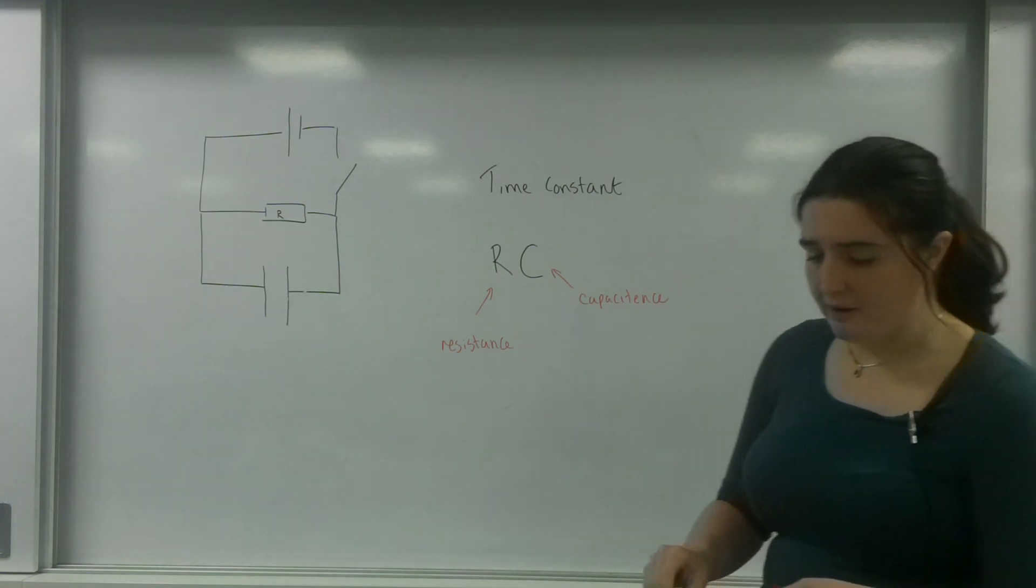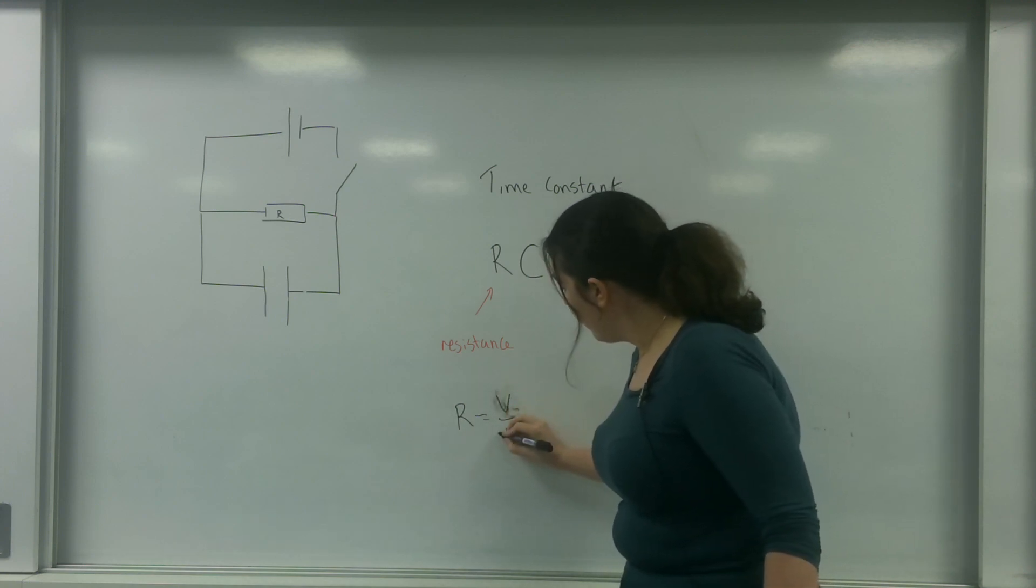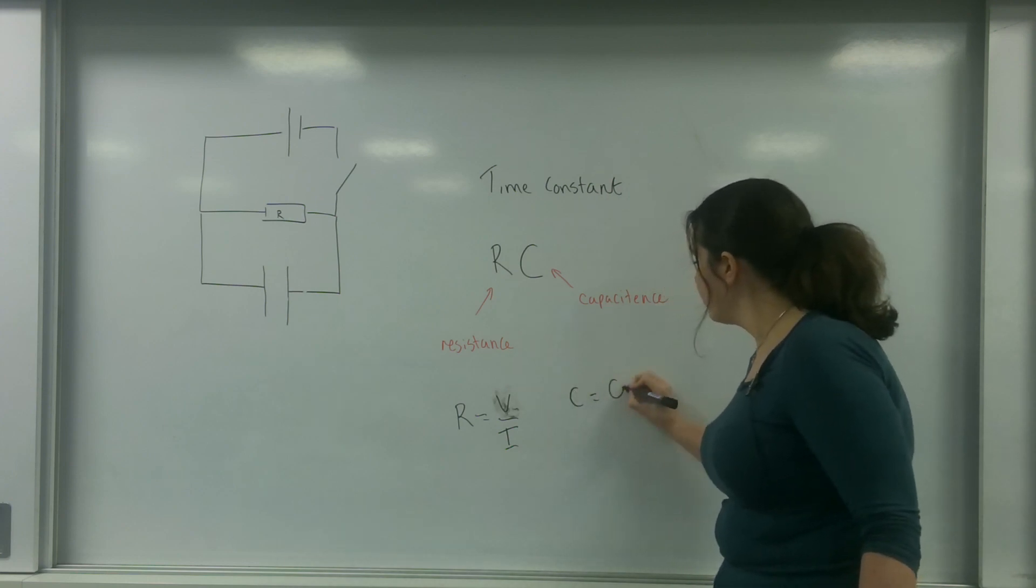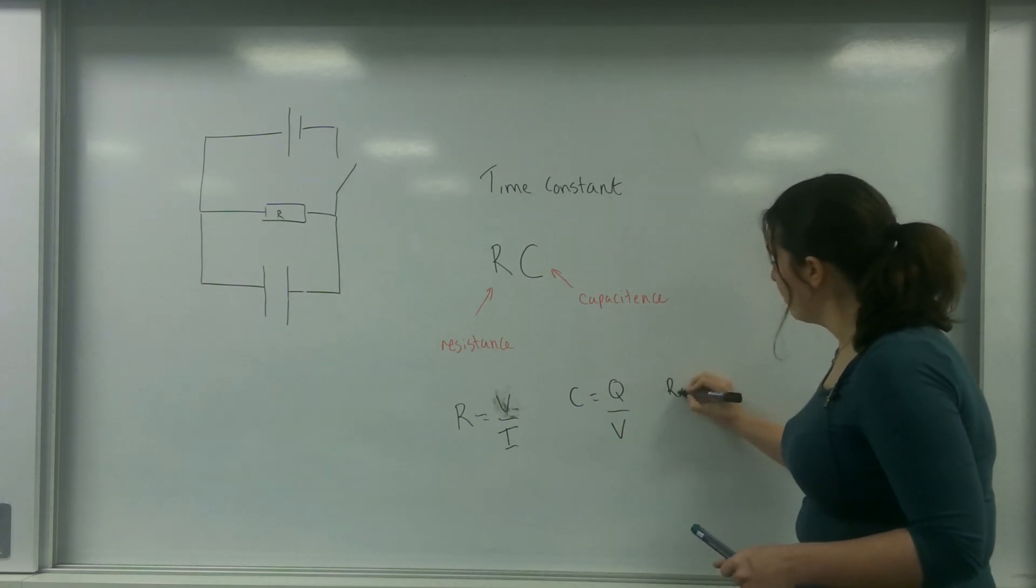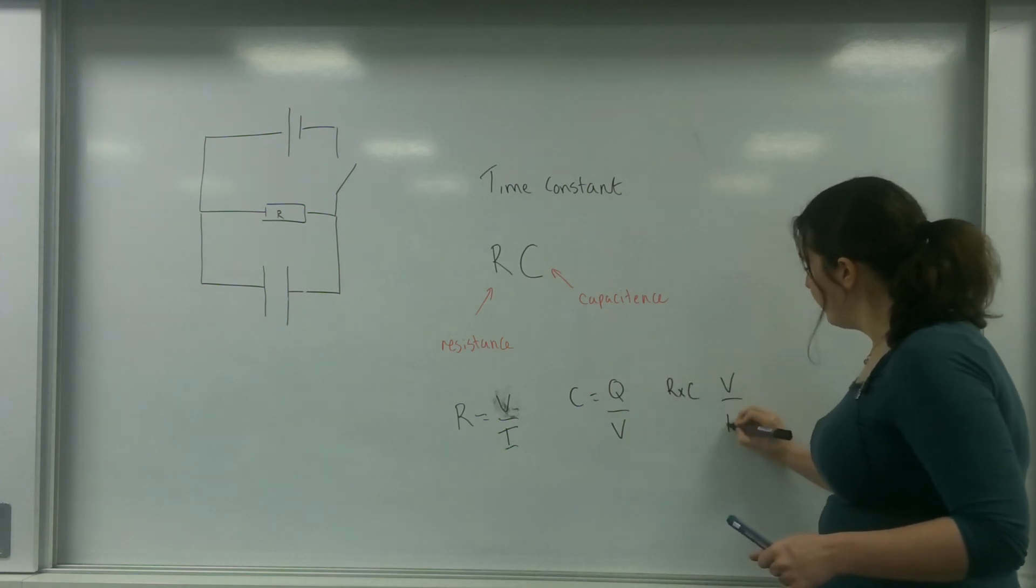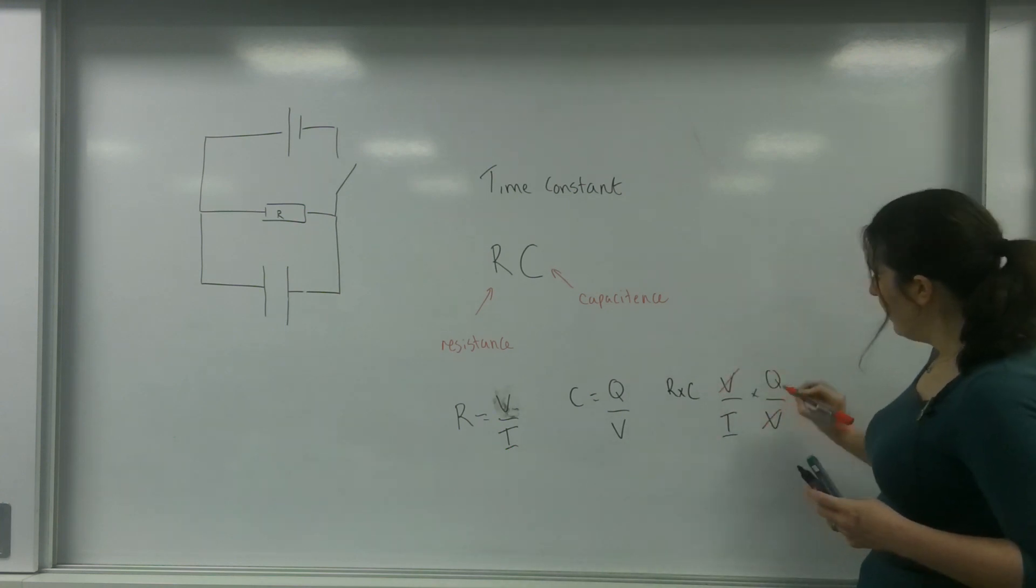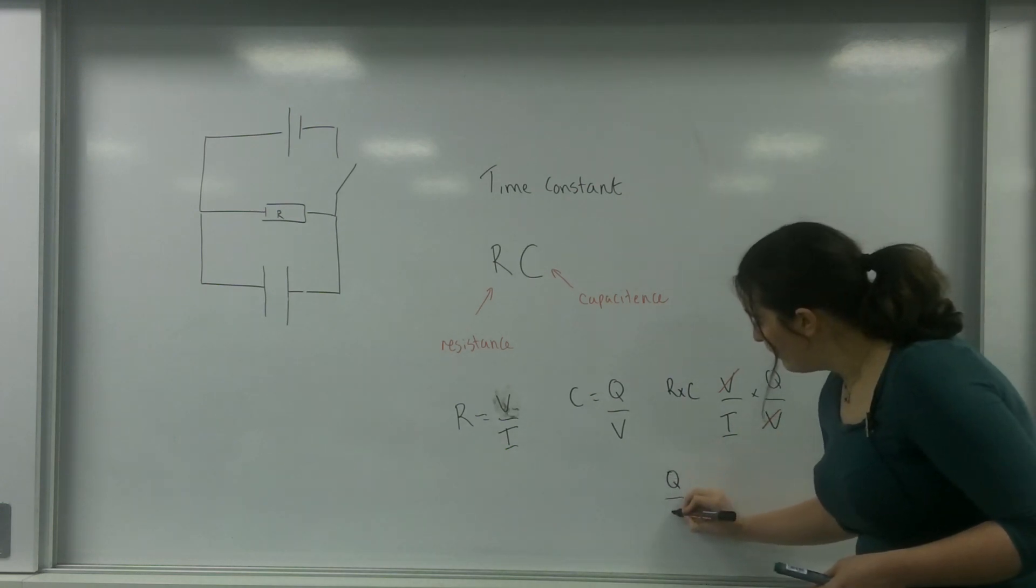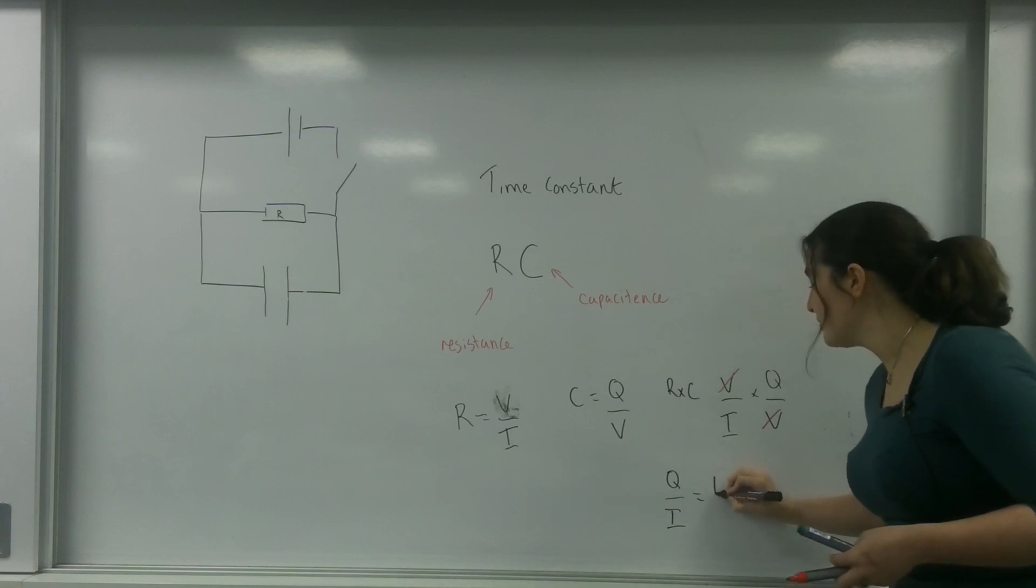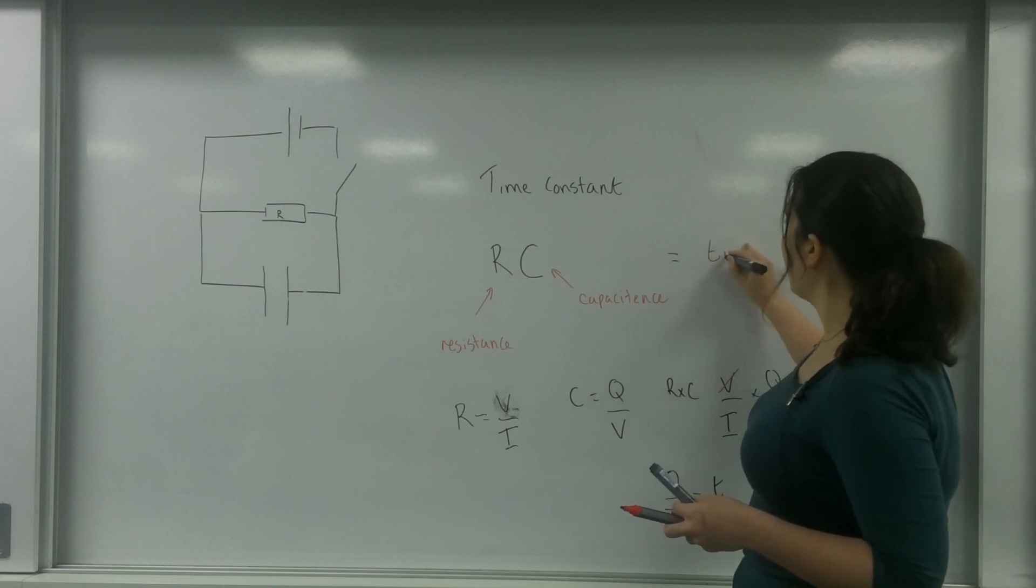Now, just to show you a units derivation here. R is V over I. C is Q over V. So multiplying them together, R times C equals V over I times Q over V. The V's cancel. I'm left with Q over I, which equals T. This is why it's called the time constant, because this represents time.